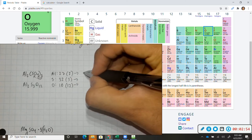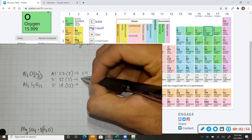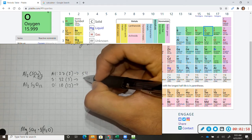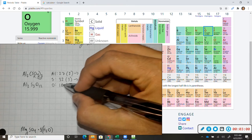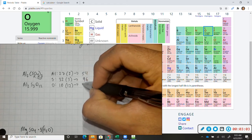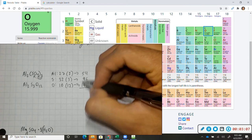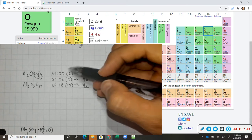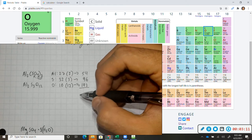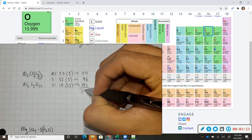So 27 times 2, that'll be 54. 32 times 3, 96. 12 times 16, I did this before, and it's 192. And if we add all of these masses for each of these elements, then we do get a mass of 342.